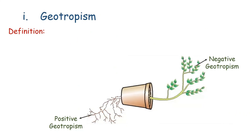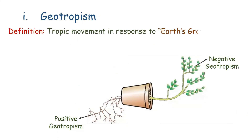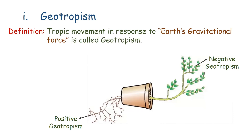Tropic movement in response to earth's gravitational force is geotropism. Roots display positive geotropism and shoots show negative geotropism.